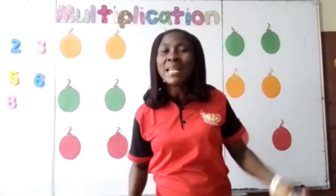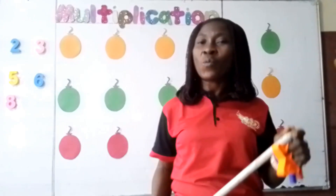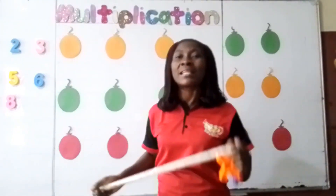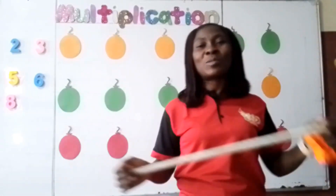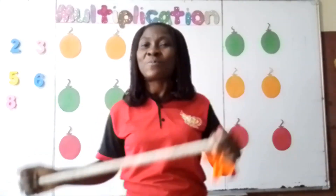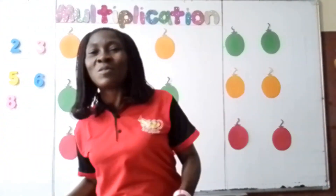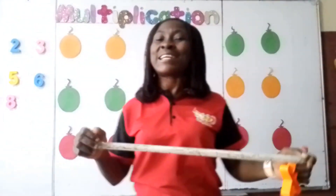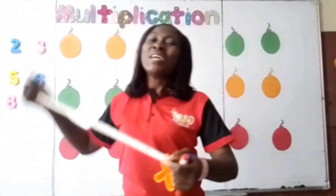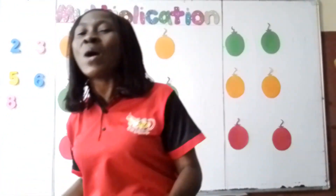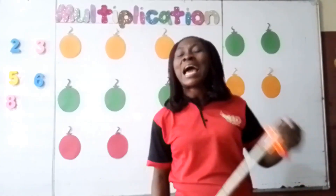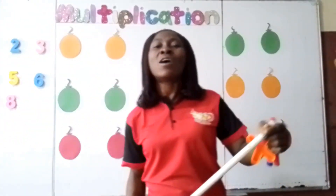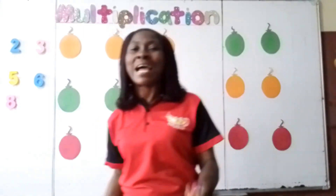Oh come let us sing our tables all together and while we sing we march along the line. Let us sing: 1 and 2, 2 and 4, 3 and 6, 4 and 8, 5 and 10, 6 and 12, 7 and 14, 8 and 16, 9 and 18, 10 and 20, 11 and 22, 12 and 24.